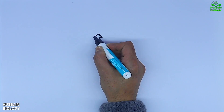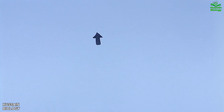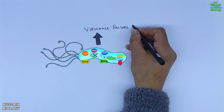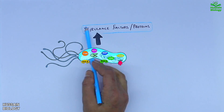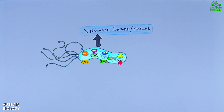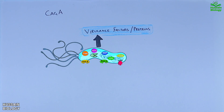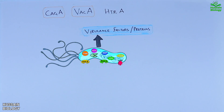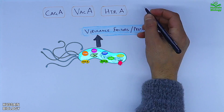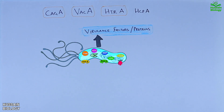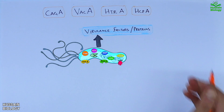It produces different kinds of virulence factors or proteins, of which the important ones are: CagA — that's cytotoxin-associated antigen A; VacA — that's vacuolating cytotoxin A; HtrA — that's serine protease; HcpA — that's Helicobacter cysteine-rich protein A.